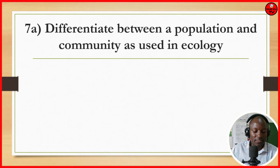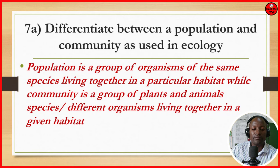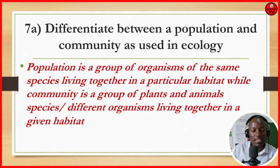Differentiate between a population and a community as used in ecology. A population is a group of organisms of the same species living together in a particular habitat. While a community is a group of organisms from different species living together or occupying a given habitat at a given time. The population is of the same species, while a community consists of different species.